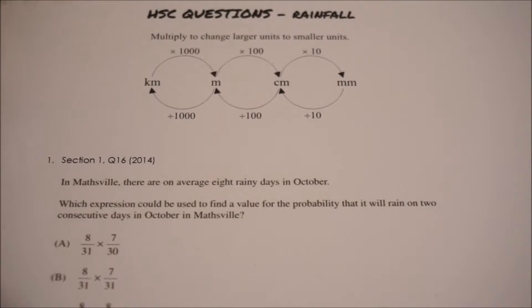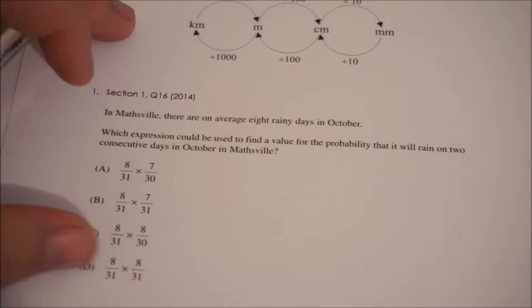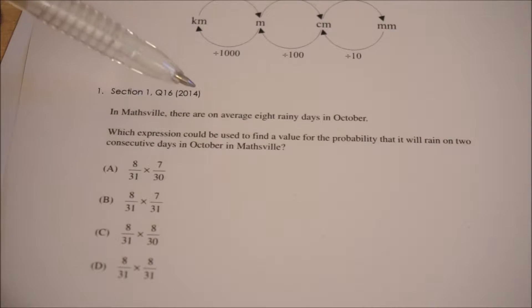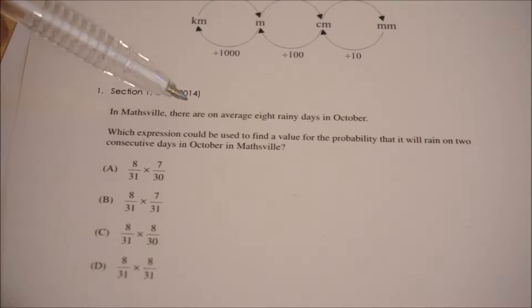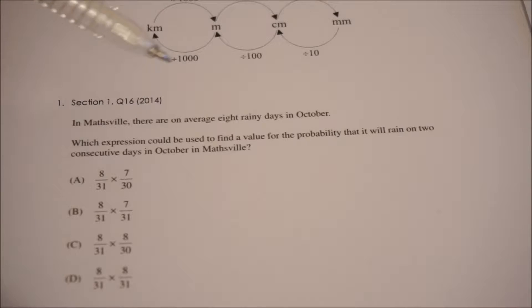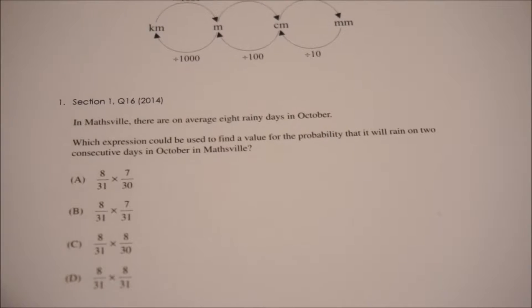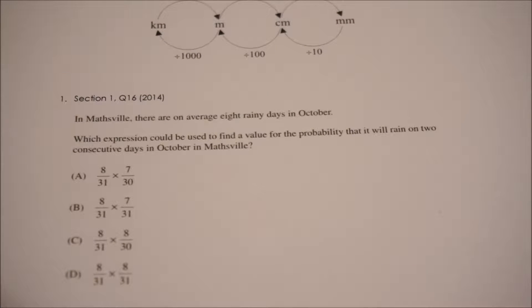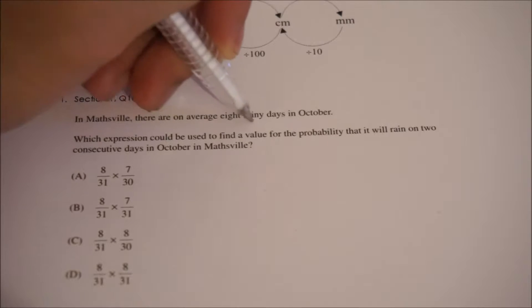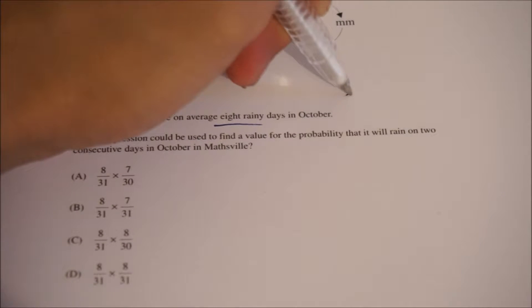Let's have a look at these HSC questions about rainfall. This first one is from 2014. In Mathsville, there are on average eight rainy days in October. Which expression could be used to find the probability that it will rain on two consecutive days in October in Mathsville? This is a probability question. The information given is that there are eight rainy days, and I know that October has 31 days.